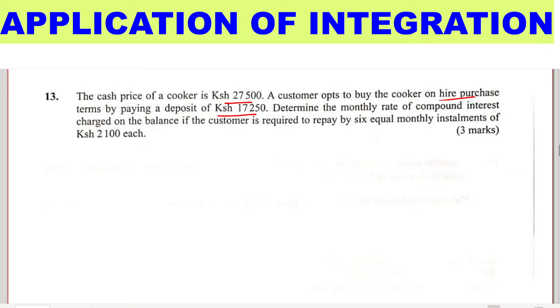We want to get the amount borrowed. The borrowed amount is calculated by taking the cash price of $27,500 and subtracting the deposit of $17,250. This difference will be the amount borrowed, which will be the principal. When we subtract this, we get $10,250.